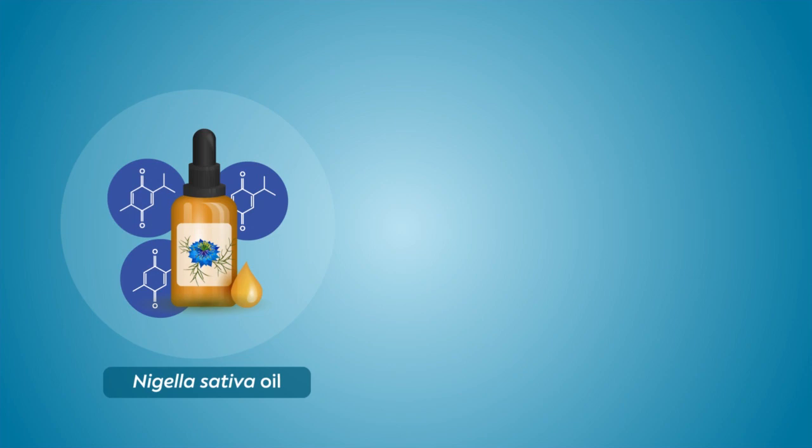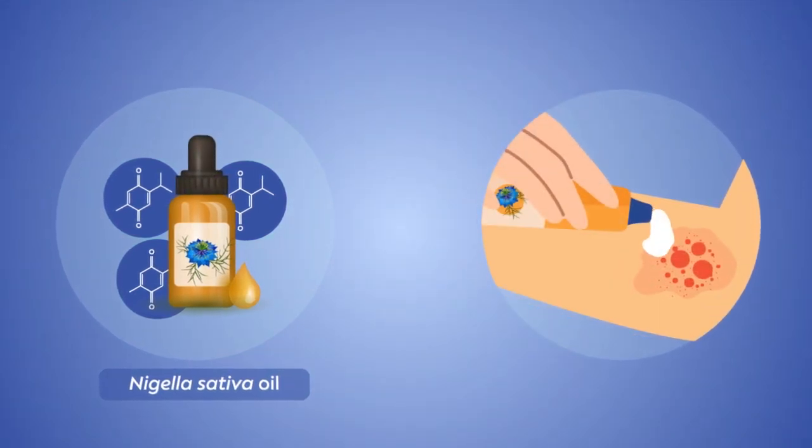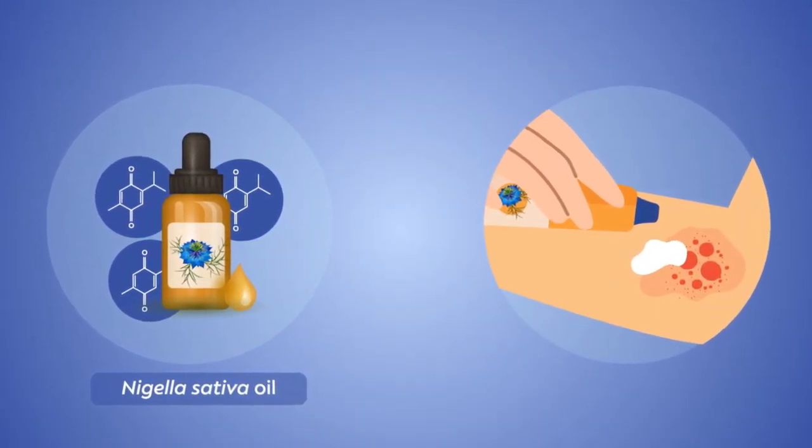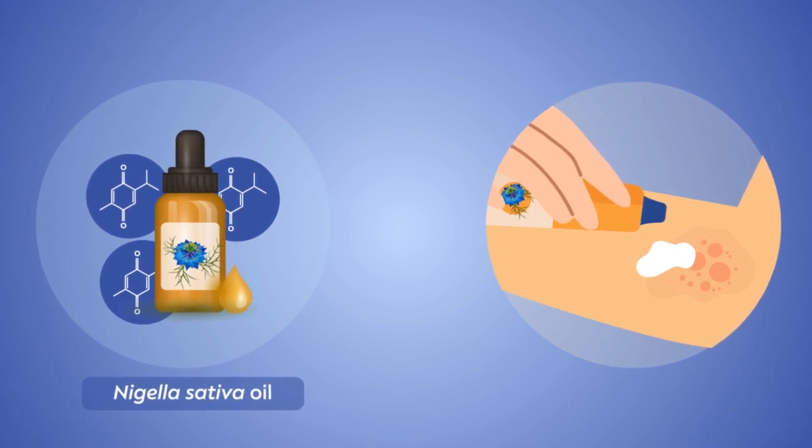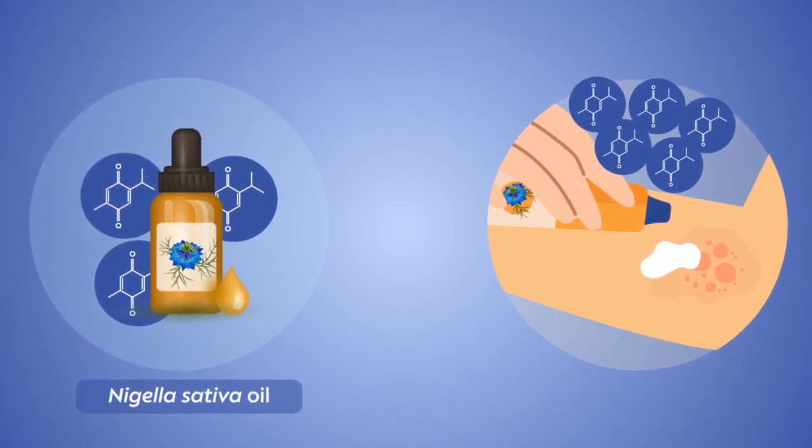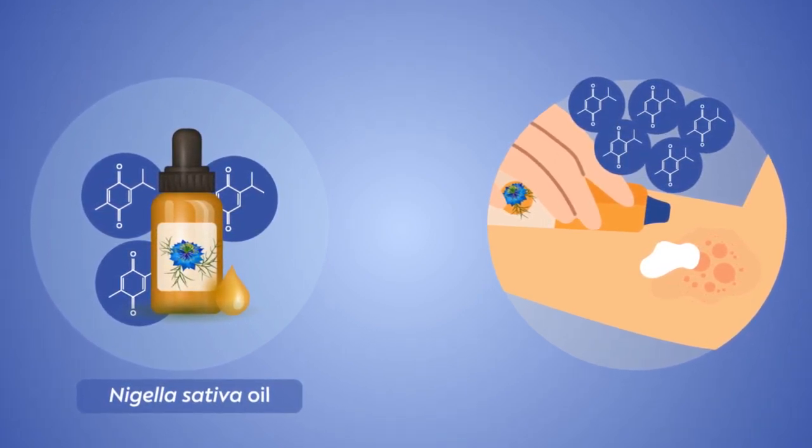Nigella sativa oil is commonly used to relieve psoriatic rashes. However, the patented gel is an improvement on the oil because its nano-formulation ensures higher concentrations of thymoquinone reach the affected area.